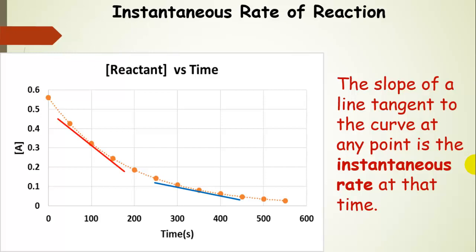If we make those little intervals smaller and smaller, then we can get to the point where we can measure an instantaneous rate of reaction. Basically, the slope of a line tangent to any place on the curve is going to give us an instantaneous reaction rate. So here is one. You can see that the slope of this line is steeper than the slope of this line later on in the reaction.